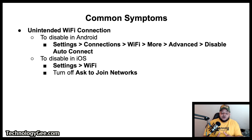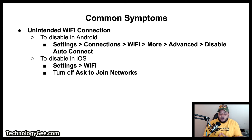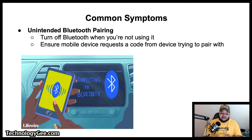Next is unintended Wi-Fi connection. Some Wi-Fi hotspots allow mobile devices to automatically connect, which can be risky because these hotspots may not be secure. To disable this on Android, go to Settings > Connections > Wi-Fi > More > Advanced and disable auto-connect. On iPhone, go to Settings > Wi-Fi and turn off Ask to Join Networks.